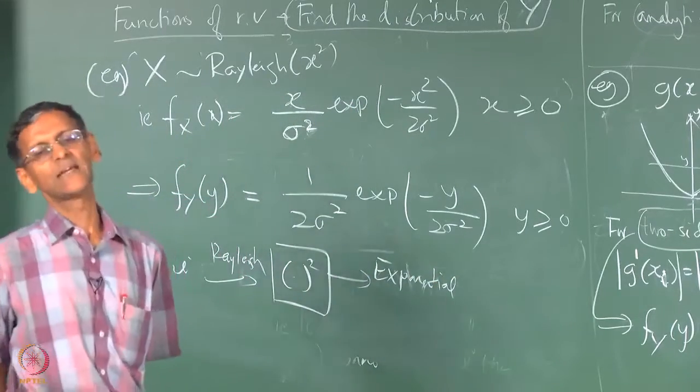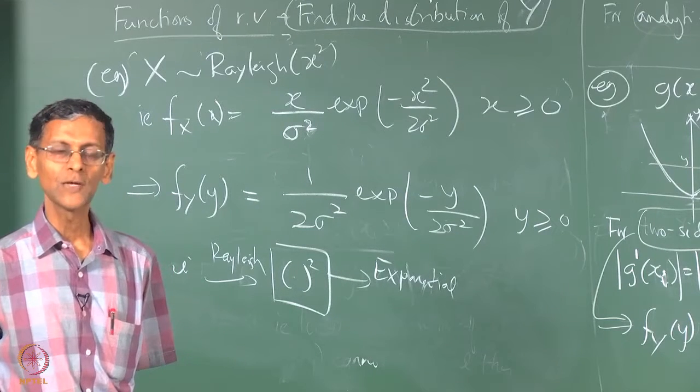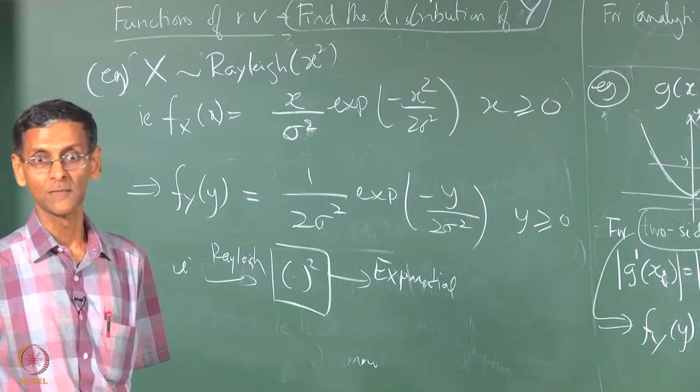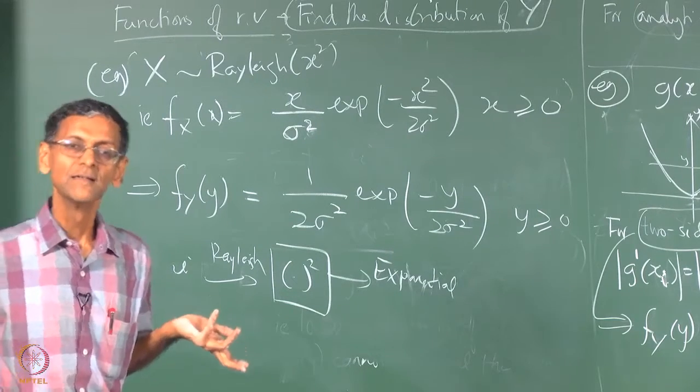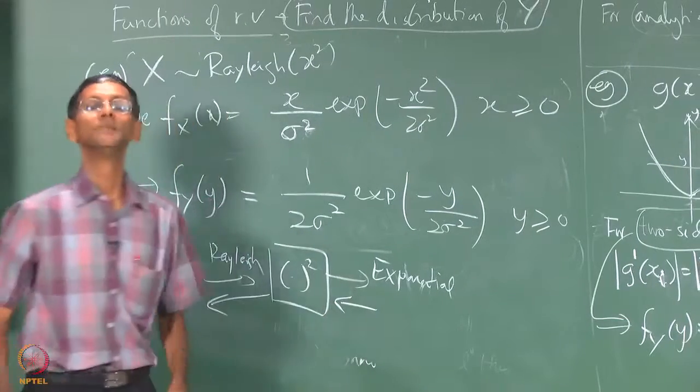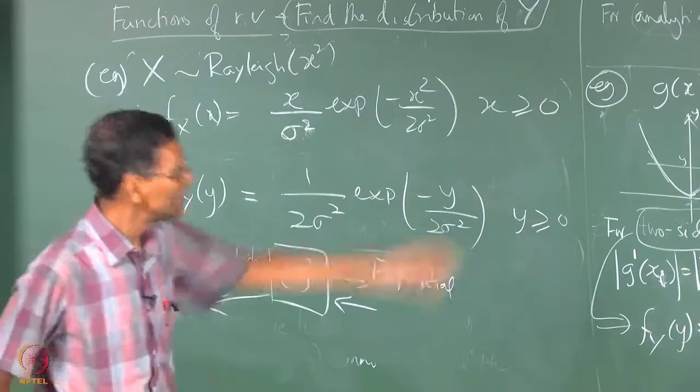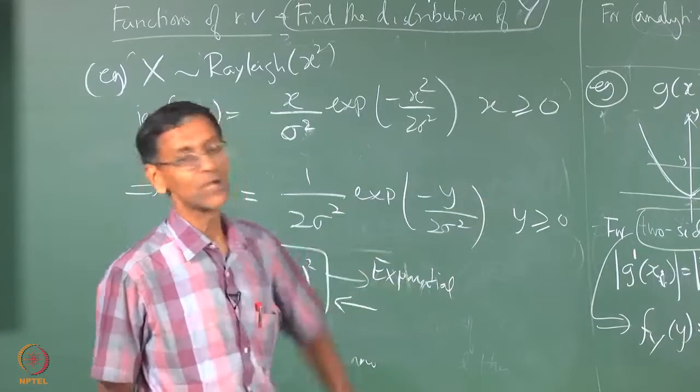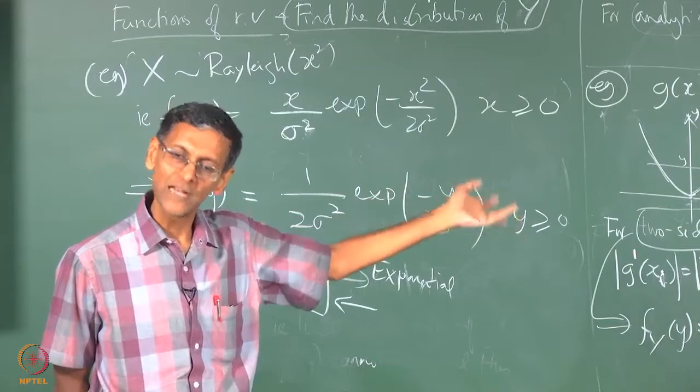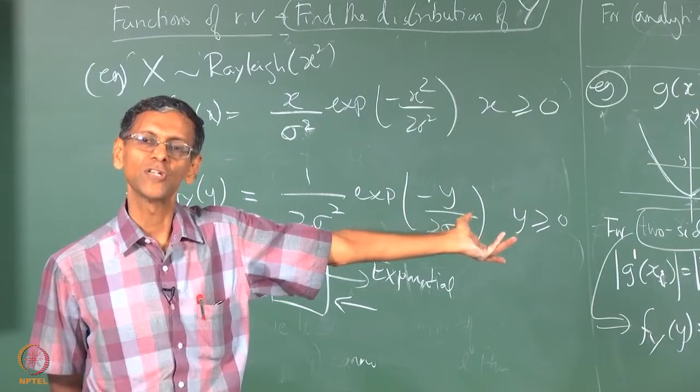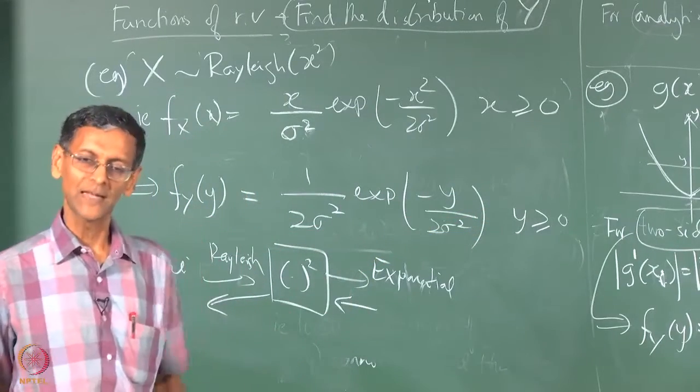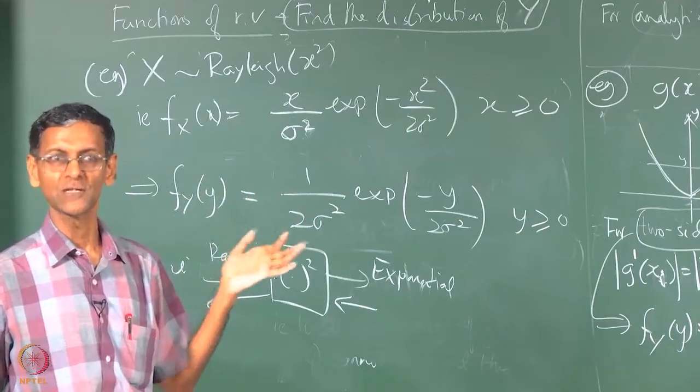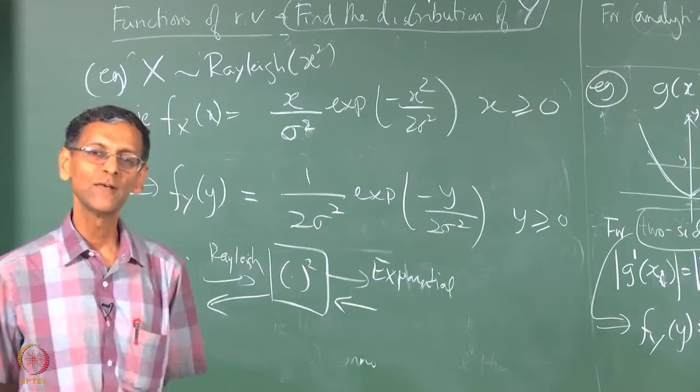So you take Rayleigh squared gives exponential. And what is important to note in such cases, the reverse transformation will also be equally valid. So what is the reverse transformation here? Root x or root y. So all these transformations work both ways. Why should they not? So it works both ways. Any transformation pair that you derive works both ways. Excepting there, the problem is if you take the square root you only get positive value. So you do not get the negative values of the Gaussian. So what you will get there will be the full wave rectified version of the Gaussian.